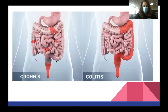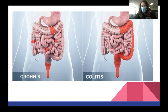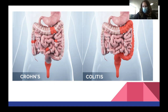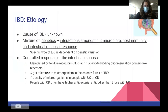In Crohn's disease, it affects segments all throughout the large and small intestines and the rectum with no particular pattern. In ulcerative colitis, it affects only the descending colon and the rectum — that distinction helps doctors make a diagnosis. The cause is unknown but involves a mixture of genetics and interactions among the gut microbiota, host immunity, and intestinal mucosal response. A specific type of IBD is dependent on that person's genetic variation.